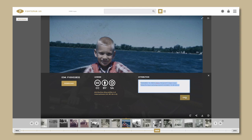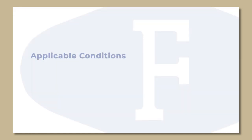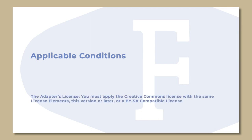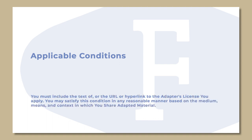The share-alike mechanism is included in the version 4.0 licenses as follows. If you share an adapted Fort Upon Iowa image you produce, the following conditions also apply. The adapter's license: you must apply the Creative Commons license with the same license elements, this version or later, or a BYSA-compatible license. You must include the text of, or the URL or hyperlink to, the adapter's license you apply. You may satisfy this condition in any reasonable manner based on the medium, means, and context in which you share adapted material. You may not offer or impose any additional or different terms or conditions on, or apply any effective technological measures to, adapted material that restrict exercise of the rights granted under the adapter's license you apply.